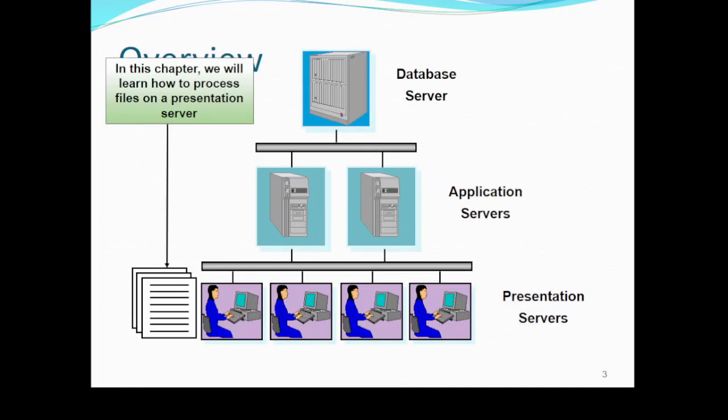Here is an example of how the files are located and how users can read the files. We will learn how to process files on a presentation server. Basically there is a three-tier architecture in every client-server environment. First of all, the database server where all the data is stored. Everything which we want to be permanent in the database we save into the database server.